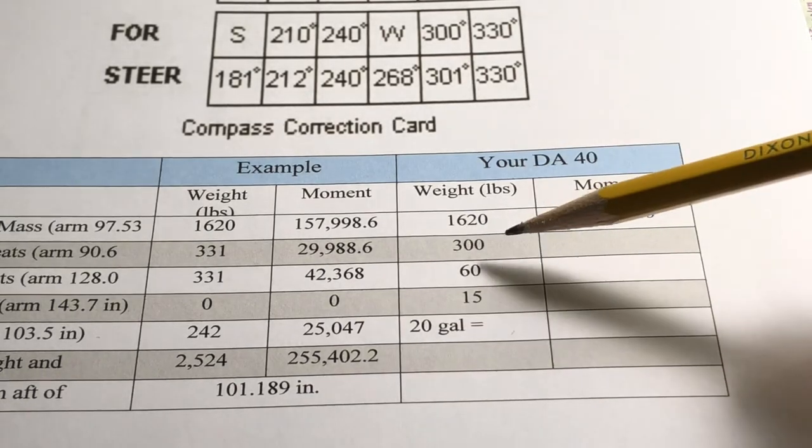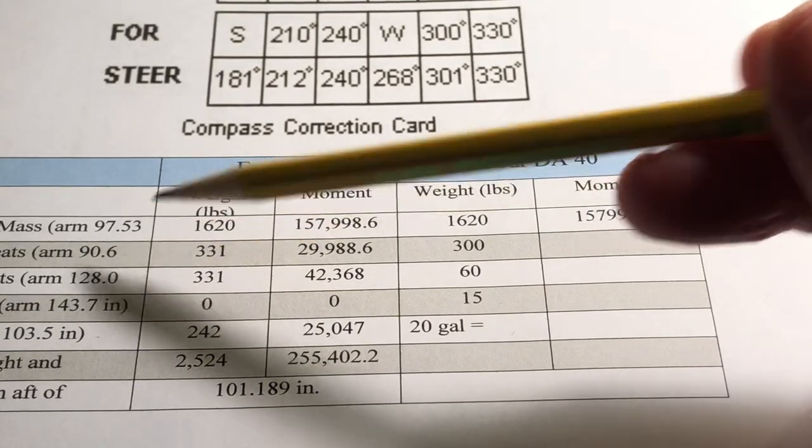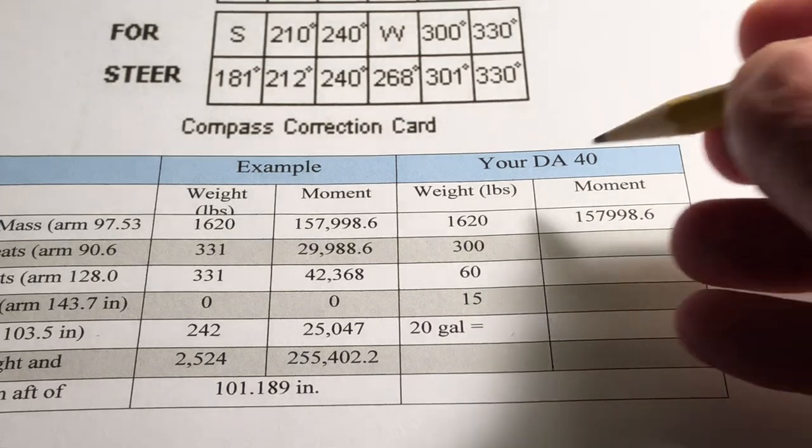We have 300 pounds in the front seats and we'll multiply that by 90.6. 300 times 90.6 is 27,180.